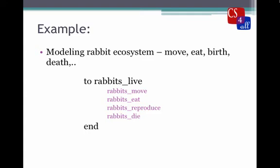Here's an example of how you might want to use procedures when modeling a problem or system. Let's look at modeling a rabbit ecosystem. In your model you might look at rabbits moving around, rabbits eating grass, rabbits giving birth to other rabbits, and rabbits dying — say from running out of food. For this simple model we look at those four things, so a procedure called 'rabbits-live' calls four other procedures: rabbits-move, rabbits-eat, rabbits-reproduce, and rabbits-die.